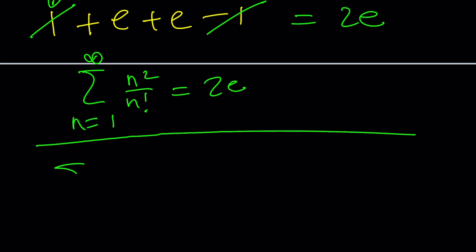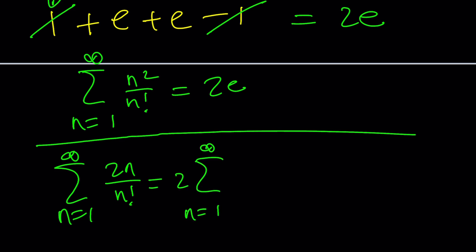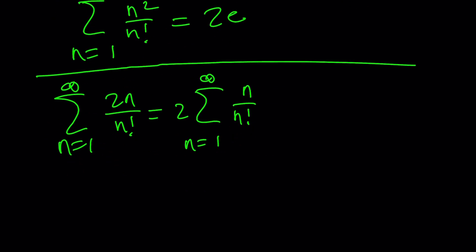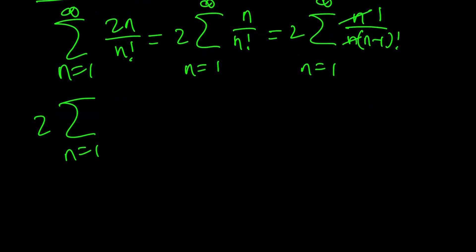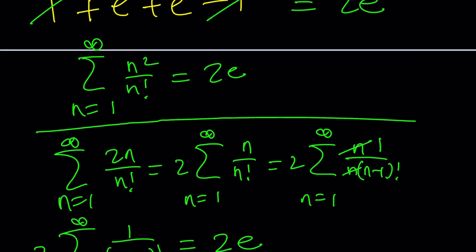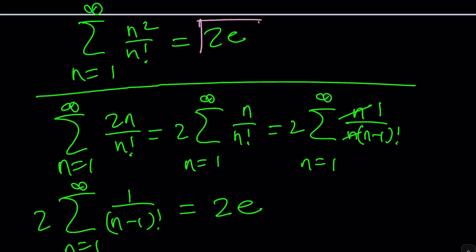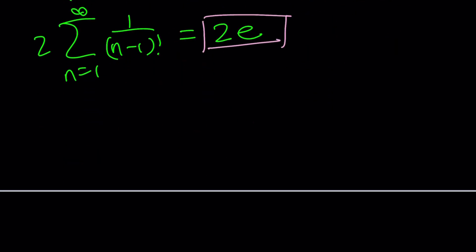The second sum is the sum of 2n over n factorial from n equals 1 to infinity. We factor out the 2, then write n over n factorial as n over n times (n−1) factorial. The n's cancel, leaving 1 over (n−1) factorial. So we get 2 times the sum of 1 over (n−1) factorial from n equals 1 to infinity, which starts at 1 over 0 factorial — that's the complete series for e. This gives us 2e again.